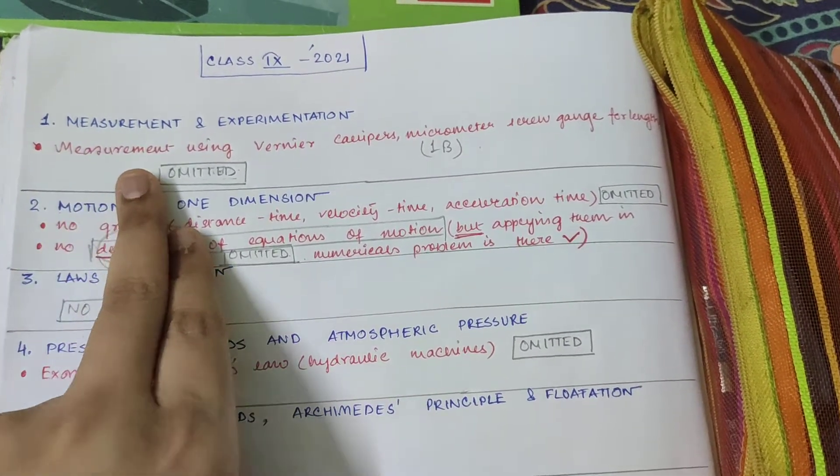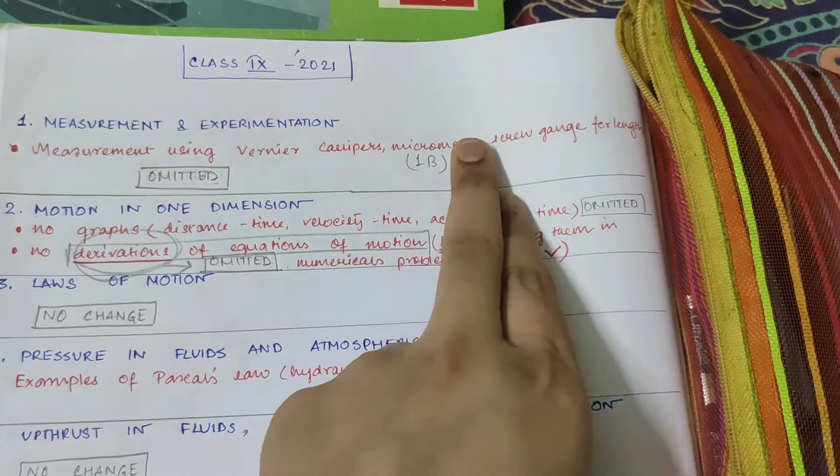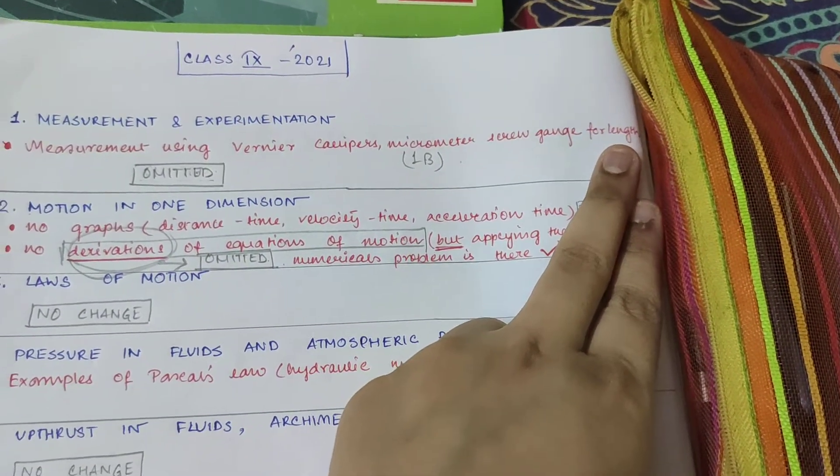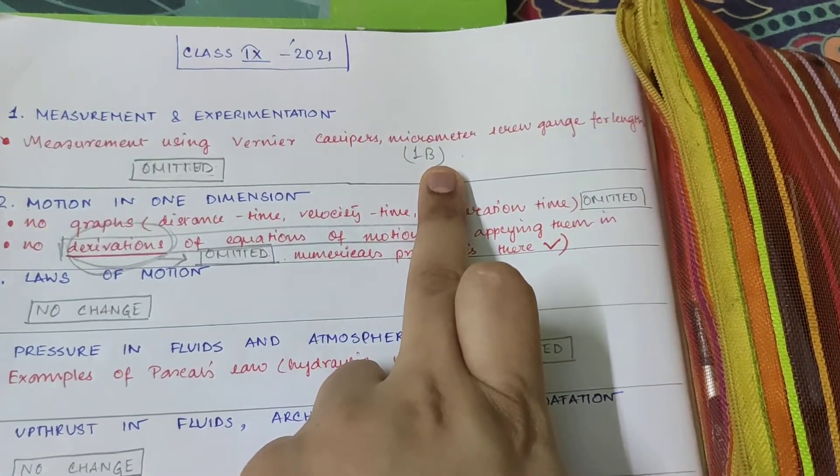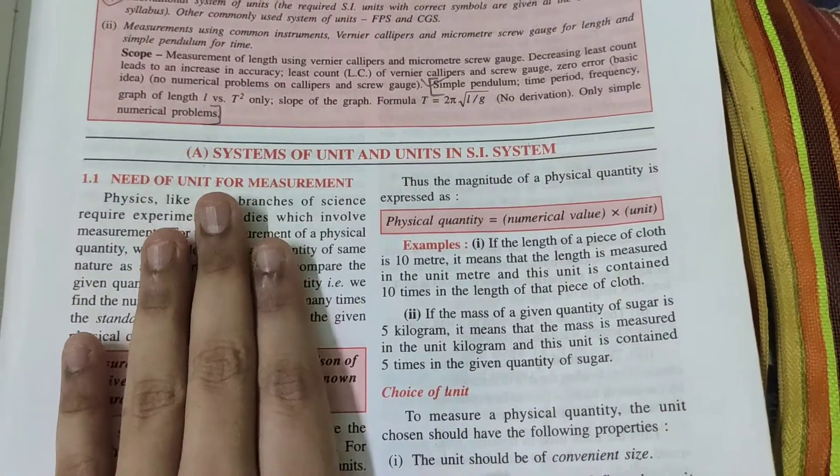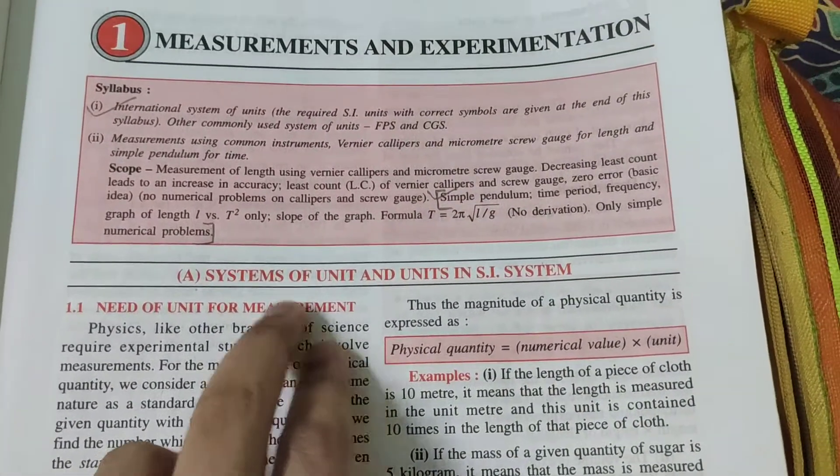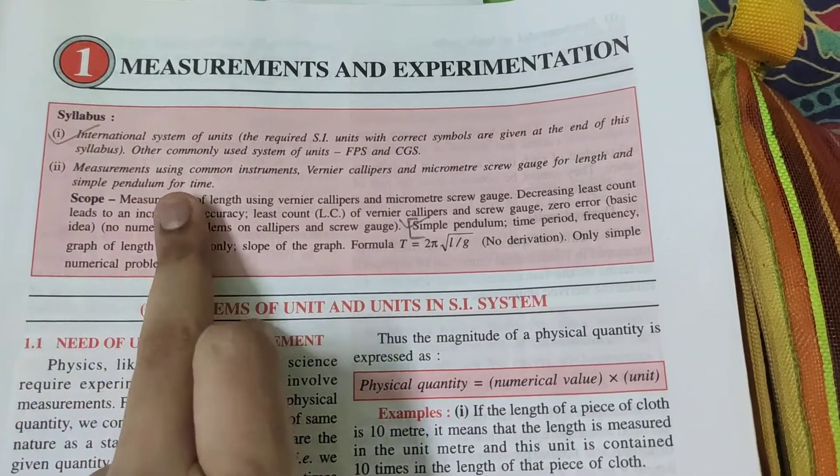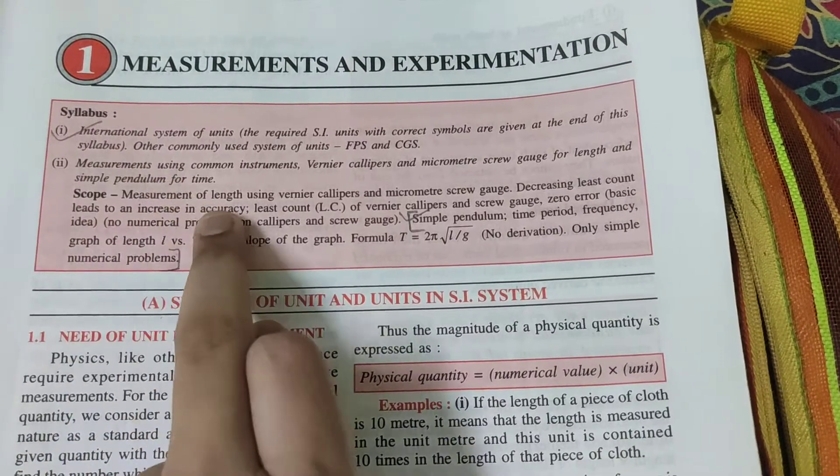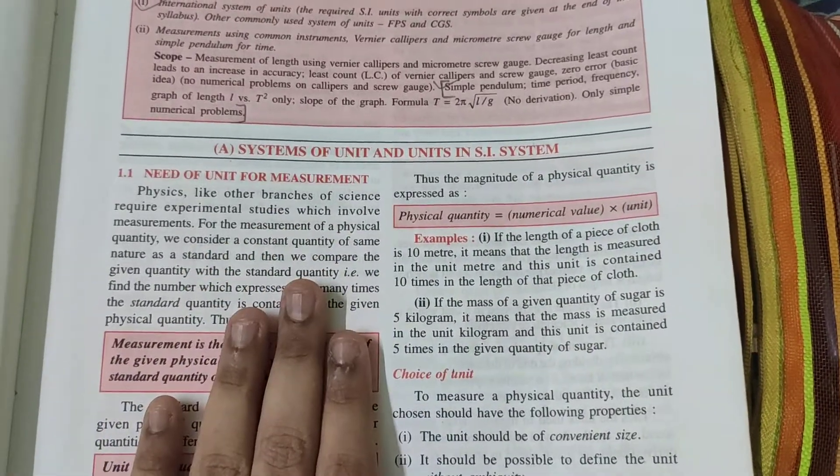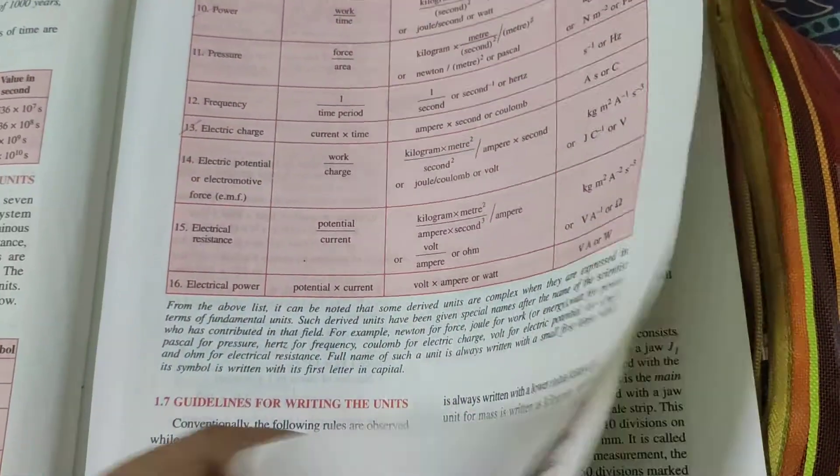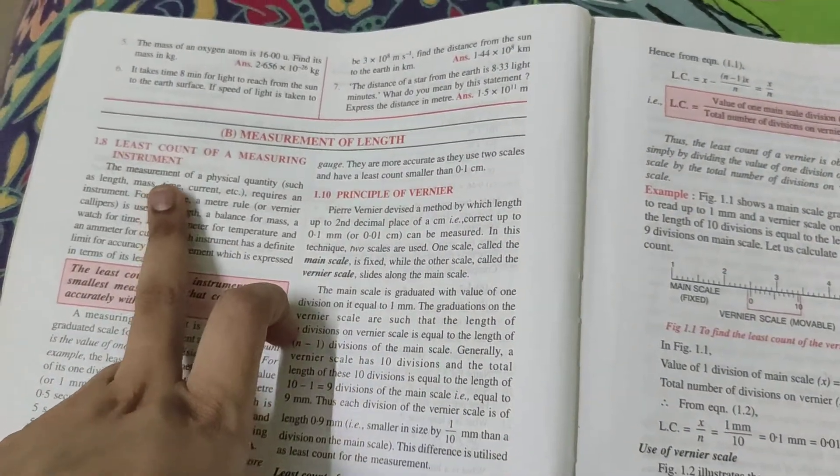This part has been omitted - measurement using vernier calipers, micrometer screw gauge for length. This part has been omitted. That means this part comes under 1B. You will find that means this is there, system of units and units in SI system is there. From this part you can very well understand, only this part is not there. That means 1A is there, system of unit and units in SI system is there. Just see 1B.